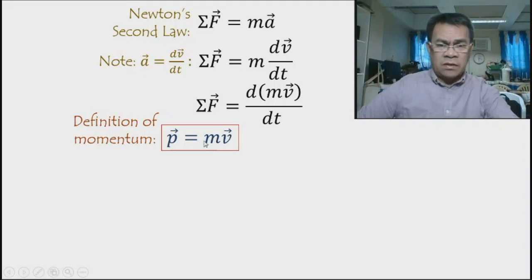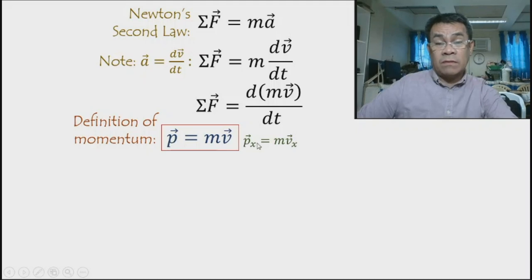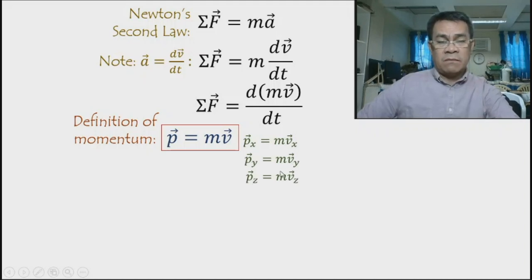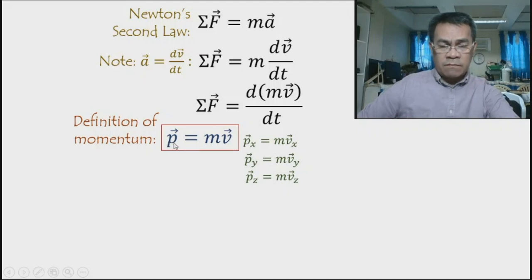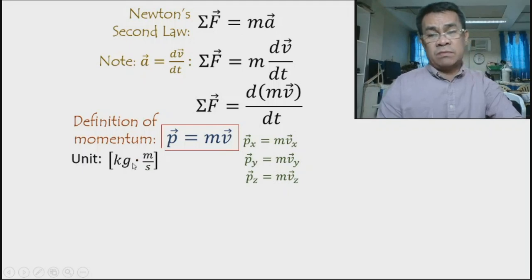The unit of momentum is found by multiplying mass times velocity: kilograms times meters per second, so the unit is kilogram meter per second. Since momentum is a vector, it has components: px = m·vx, py = m·vy, and pz = m·vz. The vector sum of these components gives the total momentum.